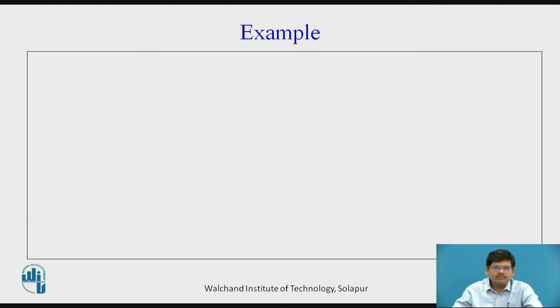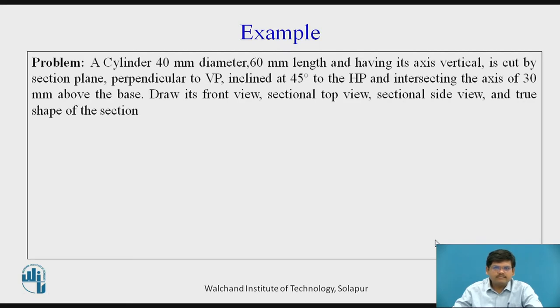Now let us move with the example. A cylinder 40 mm in diameter, 60 mm length and having its axis vertical is cut by a section plane. We have a cylinder of 40 mm diameter and 60 mm length. Height of axis is 60 mm. Base diameter is 40 mm and it is kept with its axis vertical.